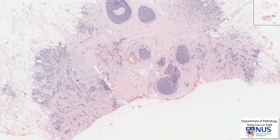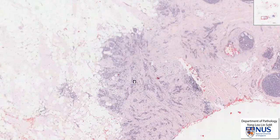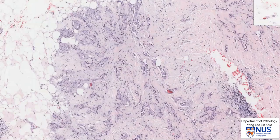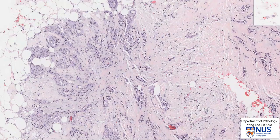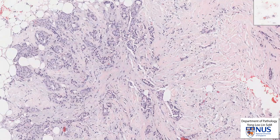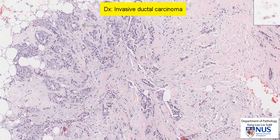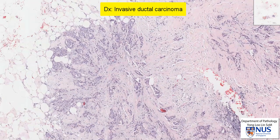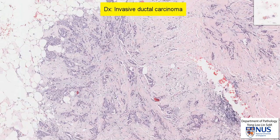Now let's focus on these areas where we can see a lot of irregular clusters of cells that seem to be directly sitting in the stroma. Here are some nests of cells, and we can also see tubule formation here and here. This is invasive ductal carcinoma. It is invasive because of the very irregular architecture, and because it doesn't appear to be within a preexisting duct or lobular system, and it is also very infiltrative in the stroma.